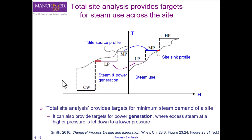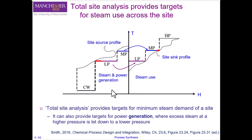So in the previous slides, we saw how we can construct our site source profile and site sink profile by extracting data from our grand composite curves for the site processes. Those processes are going to be using utilities from our central utility systems, and we can now use this information to target the steam that we are going to use or generate in our processes.